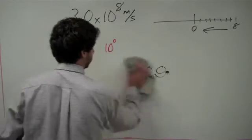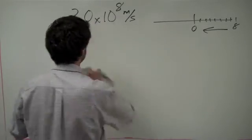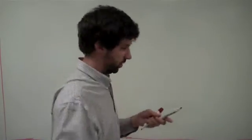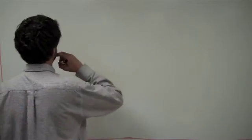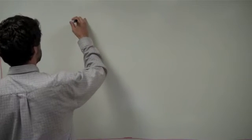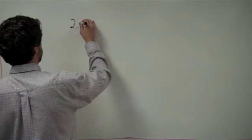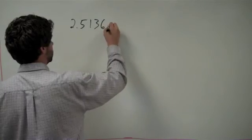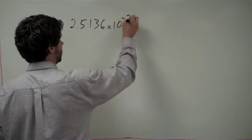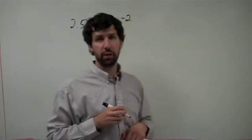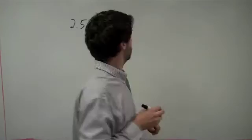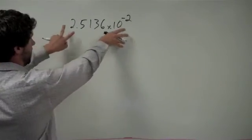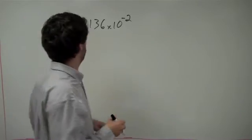Let's do one more example of getting from scientific to standard decimal notation. Let's do another small number because they tend to be hardest for students. 2.5136 times 10 to the negative second. So we've got this number in scientific notation and we want to end up with it in decimal format.